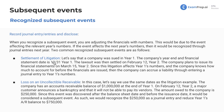Here are two common recognized subsequent events. First: settlement of litigation. Let's say the company was sued in year one. The company's year-end and financial statement date is December 31, year one. The lawsuit was then settled on February 12, year two. The company plans to issue its financial statements on March 15, year two. Since the litigation affects year one's numbers and the company knows how much to account for before the financial statements are issued, the company can accrue a liability through a journal entry to year one's numbers.